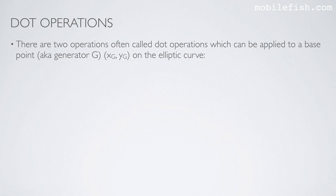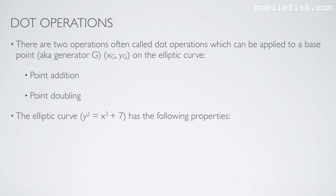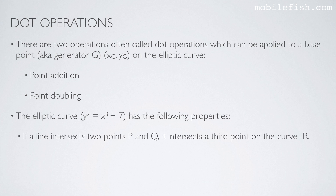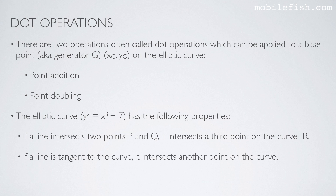There are two operations often called dot operations which can be applied to a base point on the elliptic curve: point addition and point doubling. The elliptic curve has the following properties: if a line intersects two points P and Q, it intersects a third point on the curve labeled minus R. If a line is tangent to the curve, it intersects another point on the curve. All vertical lines intersect the curve at infinity.